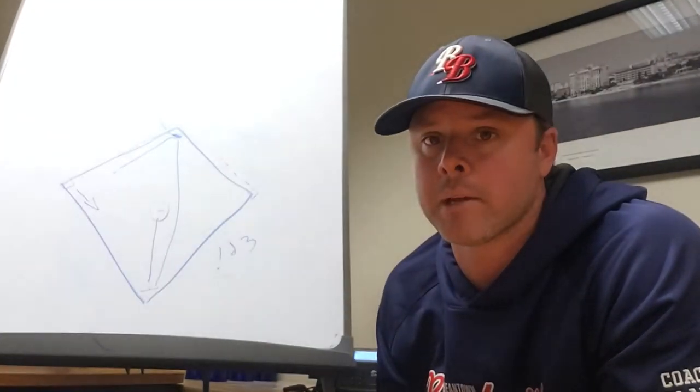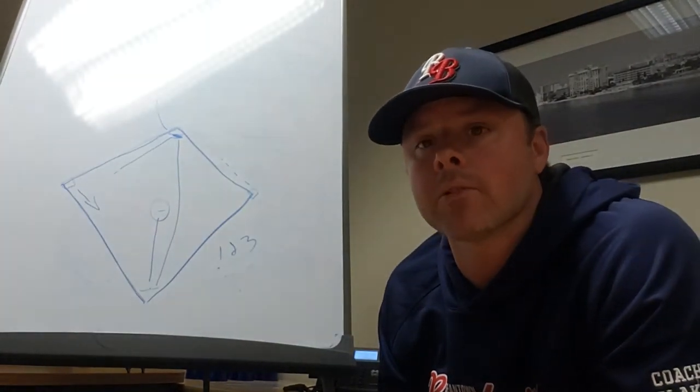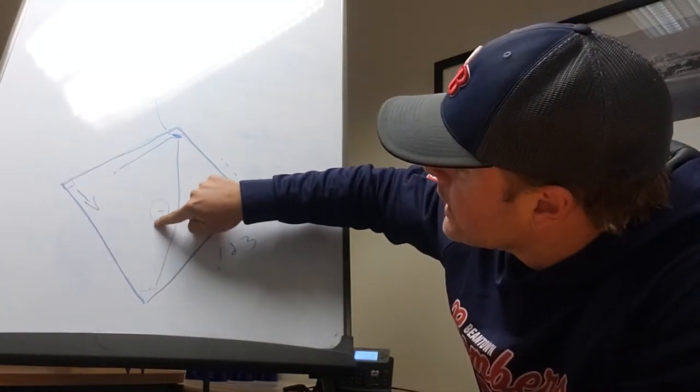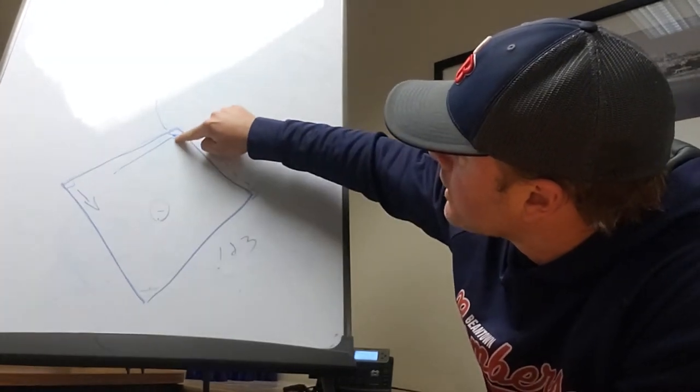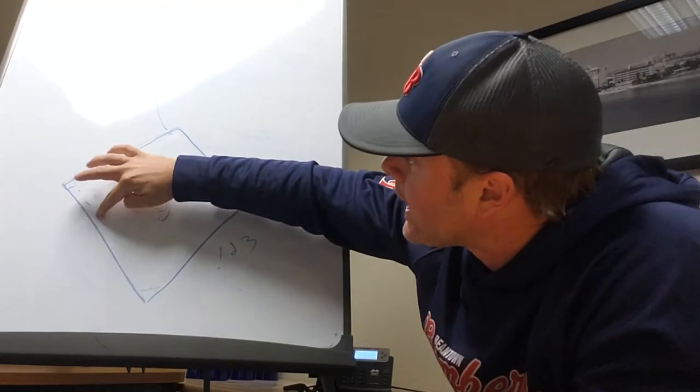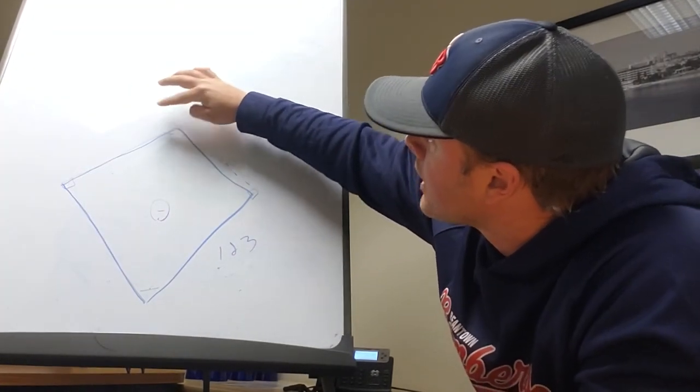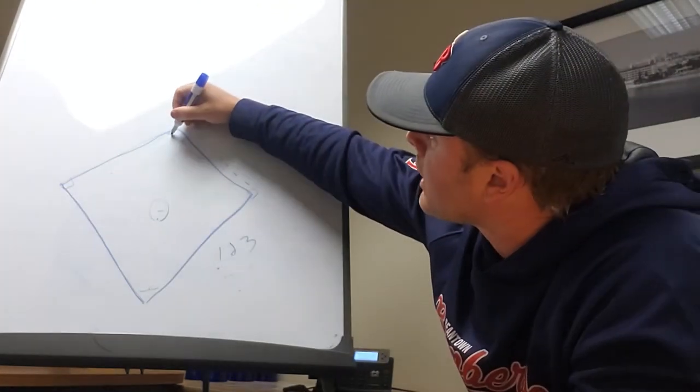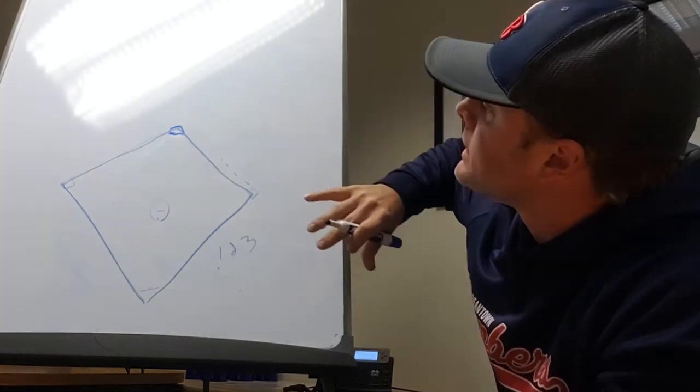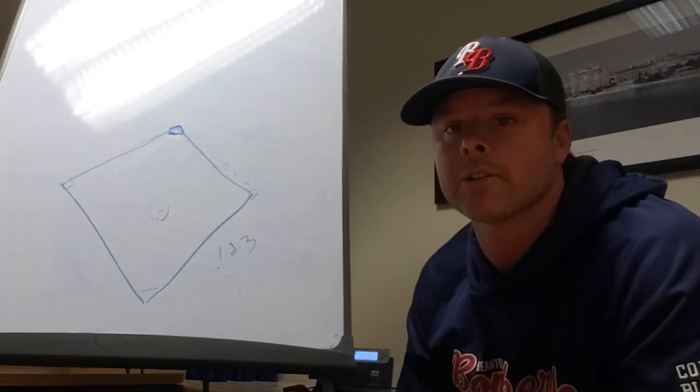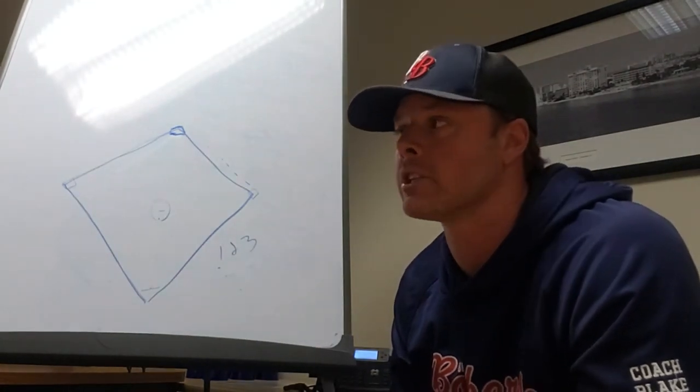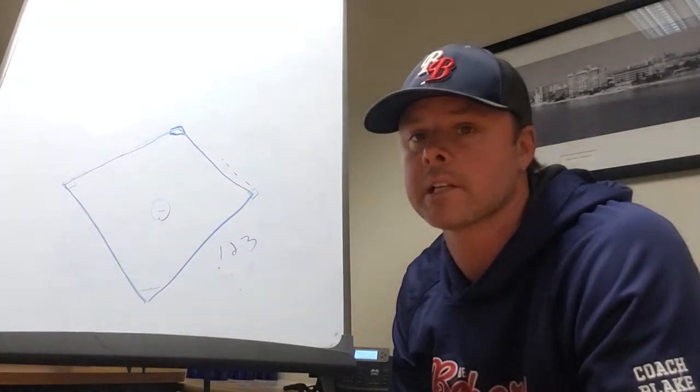And again, maybe you're down big and it doesn't really matter. You're just trying to get outs. Maybe you're up big, same thing. On the Little League field, this throwdown is a great play because your chances of getting him out at second base are fairly high. On the big field, I don't necessarily love it as much because your chances of getting the guy out at second, especially at the U11 level, are really low. But then on the high school field, you have an increased chance of getting that guy at second. So this play in the situations we just talked about actually ends up being a smart play.